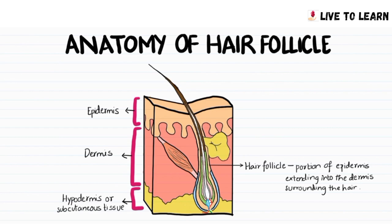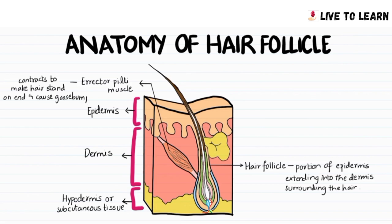The erector pili is a band of smooth muscle that contracts to make the hair stand on end and cause goosebumps. The hair shaft has three layers. The medulla is the innermost layer, outside that is the cortex, and the outermost layer is the cuticle.